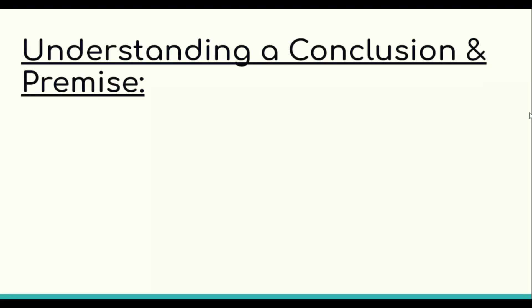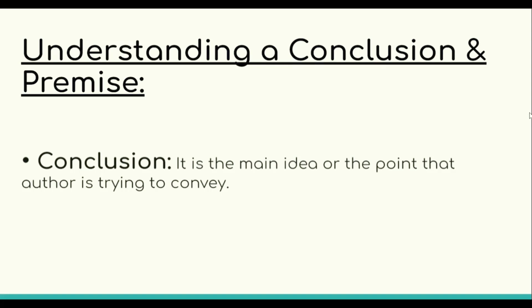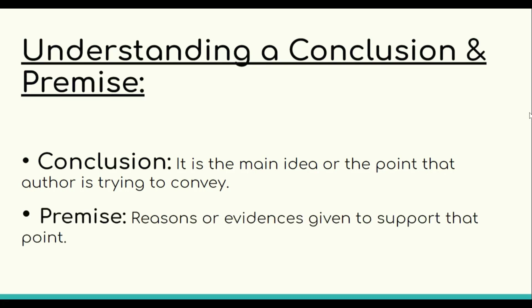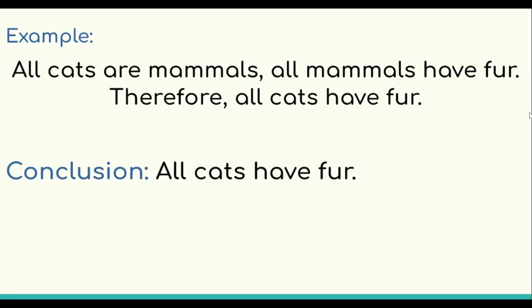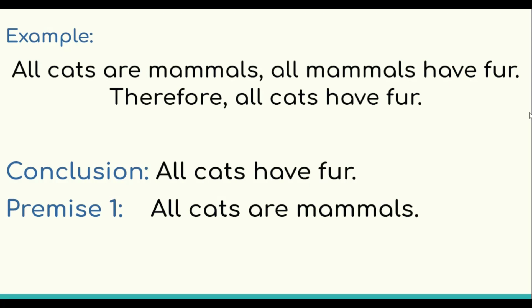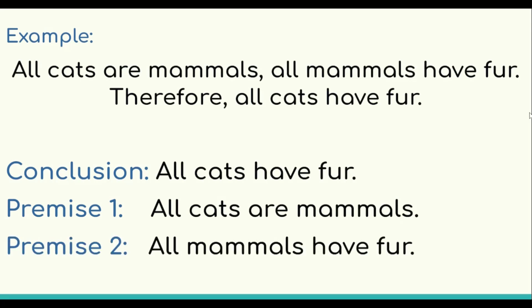Understanding a conclusion and premise: these terms are used interchangeably but they have different meanings. A conclusion is the main idea or point that the author is trying to make, and the premises are the reasons or evidence given to support that point. For example: 'All cats are mammals. All mammals have fur. Therefore, all cats have fur.' Here, the conclusion is 'all cats have fur,' and the two premises are 'all cats are mammals' and 'all mammals have fur.'